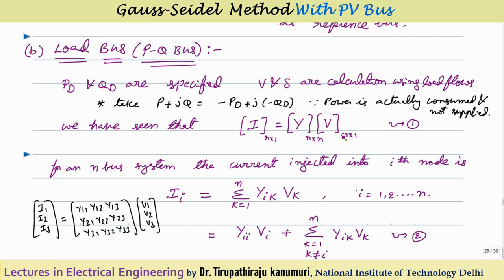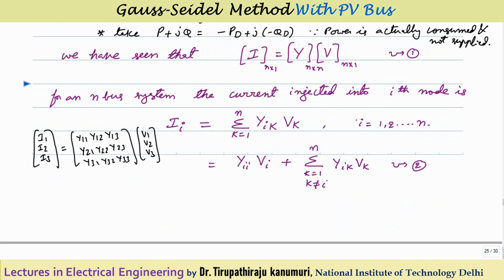Current can be calculated as the admittance matrix multiplied by the voltage matrix. For an N-bus system, the current injected into the ith node - for example in a 3-bus system, I1, I2, I3 - can be represented as Y multiplied by V. To calculate I2: I2 = Y21·V1 + Y22·V2 + Y23·V3. In generalized form, the current injected into the ith bus is II = Σ(k=1 to N) Yik·Vk.